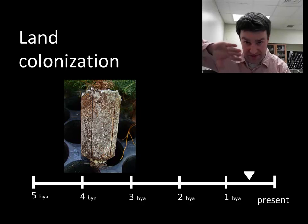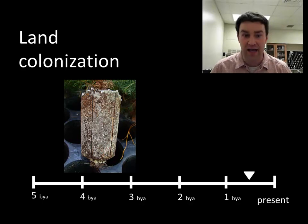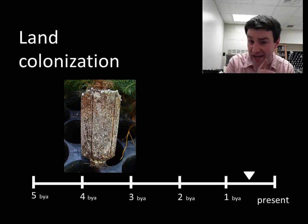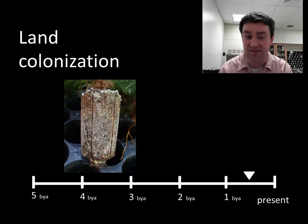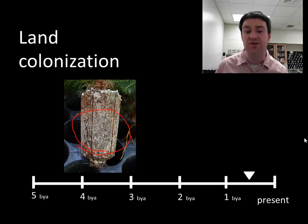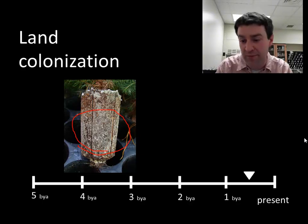Maybe hundreds of millions of years after that, we finally start to see sophisticated organisms — plants, fungi, animals — and the colonization of land. Bacteria likely colonized land long before this, but thinking about the diversity of life we now see on land, plants and fungi probably went first. Mycorrhizal relationships between fungi and plant roots helped plants get soil nutrients, water, and support, while the plants fed the fungi. So they probably helped each other, and then animals came much later.